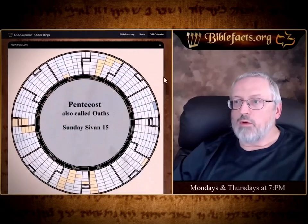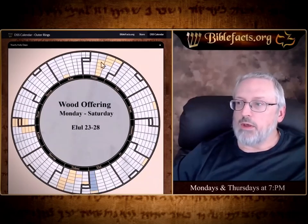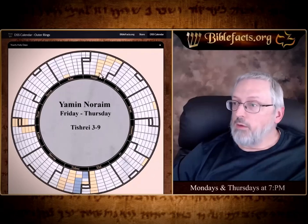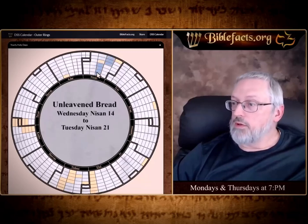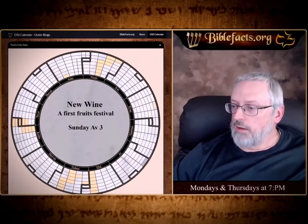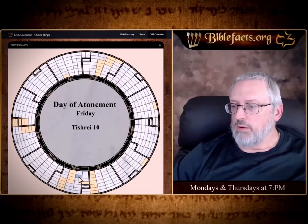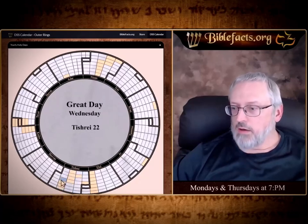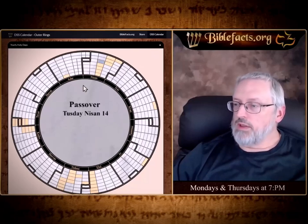Here we have the yearly holy days. On the 14th of Nisan is Passover, then unleavened bread, first fruits, Pentecost, new wine, new oil, the wood offering week. Then it's Rosh Hashanah, the Yamim Noraim between the two, the Day of Atonement, and the Feast of Tabernacles with the Great Day. Then we've got Hanukkah, then Purim, and we start over. You can see the year, how close you are to the festivals, and they just line up.